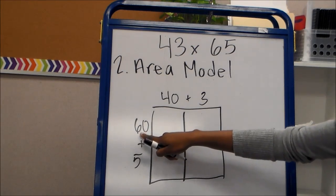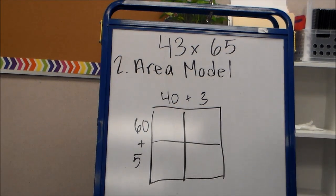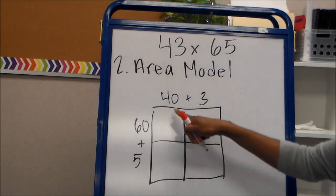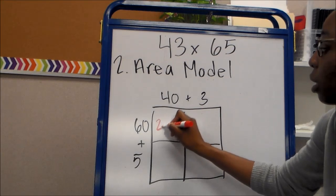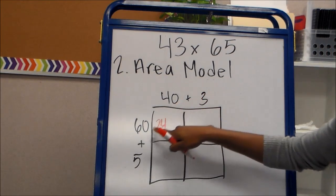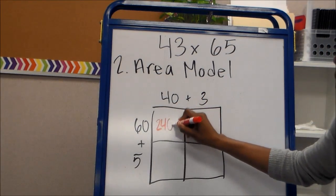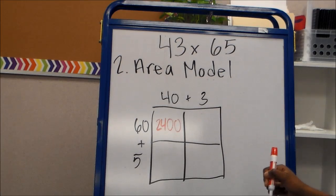So we have 60 times 40. And if you don't know what 60 times 40 is, you have the 6 and the 4. 6 times 4 is 24. And you just add on those two zeros. So two zeros. 2400.